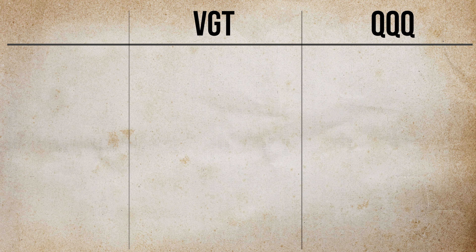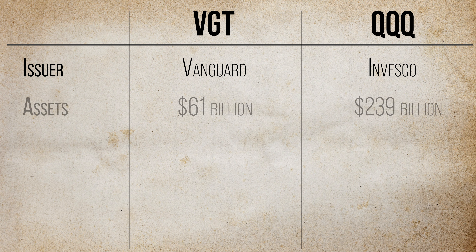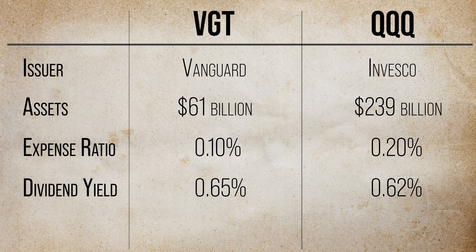Both funds are well-established and large ETFs managed by respectable investment powerhouses. QQQ had a slight head start and enjoys higher popularity among investors. The assets under management for QQQ are almost four times bigger compared to VGT. QQQ has a higher expense ratio compared to VGT, though expenses are pretty low for both of them.